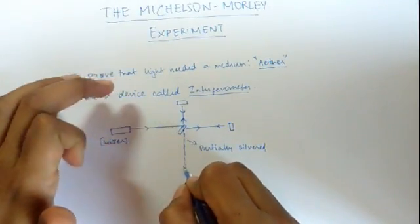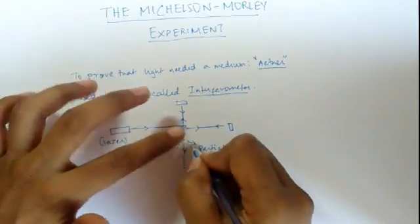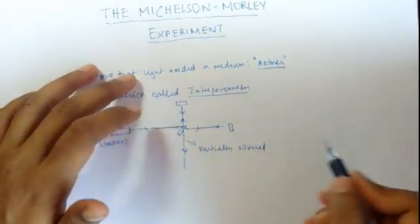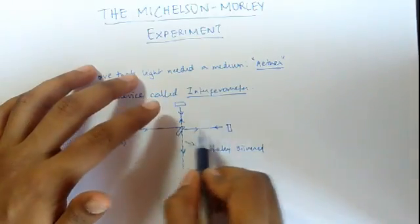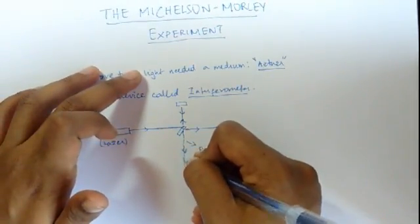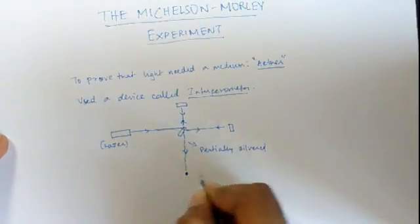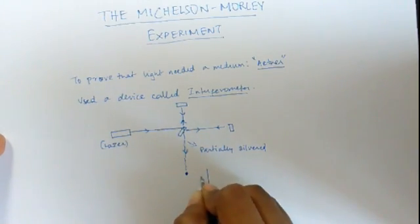The set of rays which get reflected and passed through this mirror when they come back from these two mirrors, they are allowed to interfere and they form an interference pattern over here, somewhat like this.